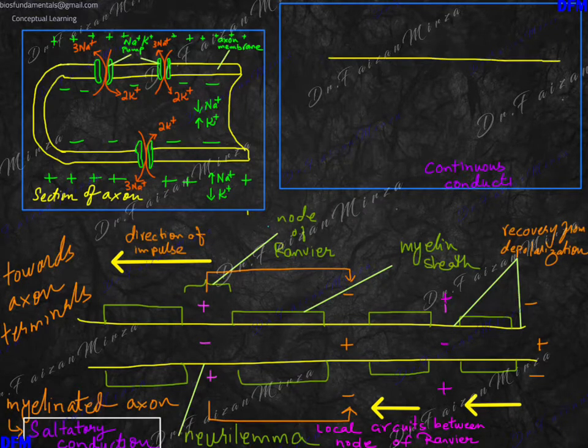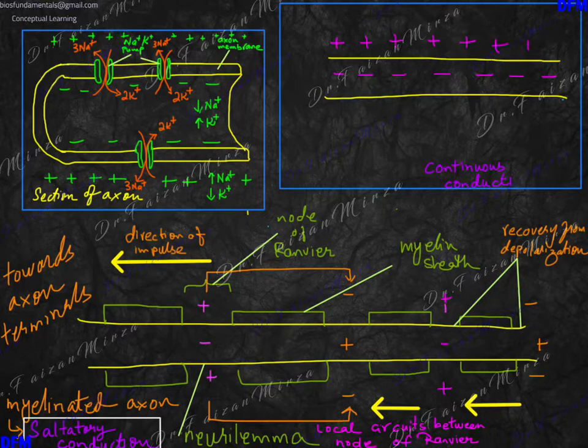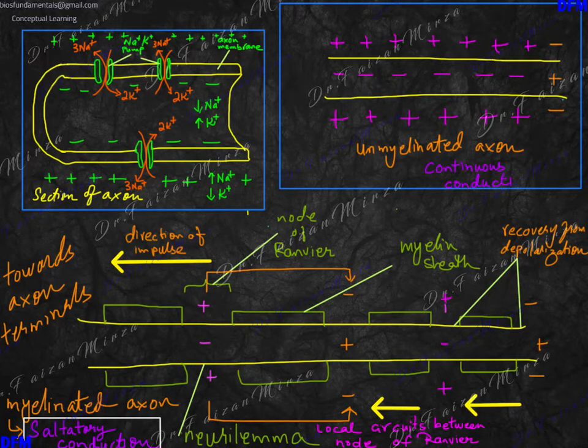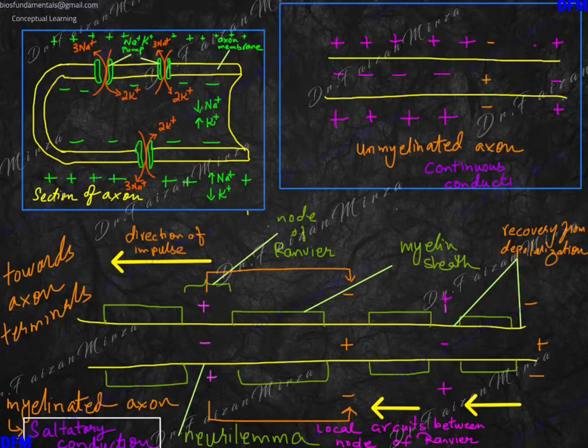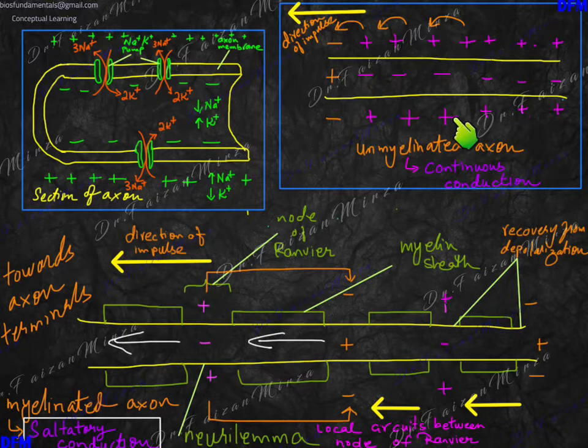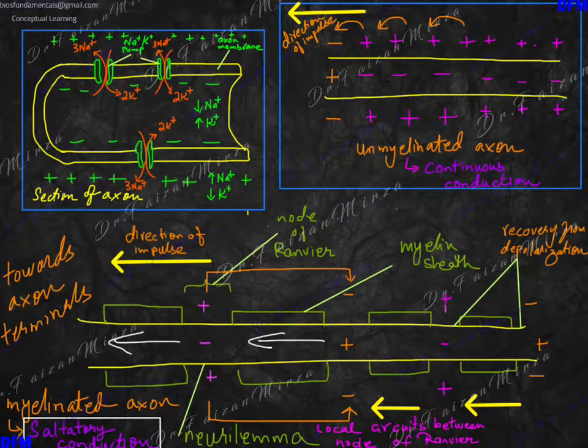What is continuous conduction? In continuous conduction we do not have myelin sheath wrapped around the axon, so the entire axon is exposed and we have every part of the membrane undergoing depolarization and repolarization. There is no concept of local circuits. Every part of the membrane must undergo sodium ions entering and potassium ions leaving and so on, and this obviously takes a longer time. That's why unmyelinated axons which allow continuous conduction to occur transmit much slower impulses as compared to a myelinated axon which allows saltatory conduction to take place.